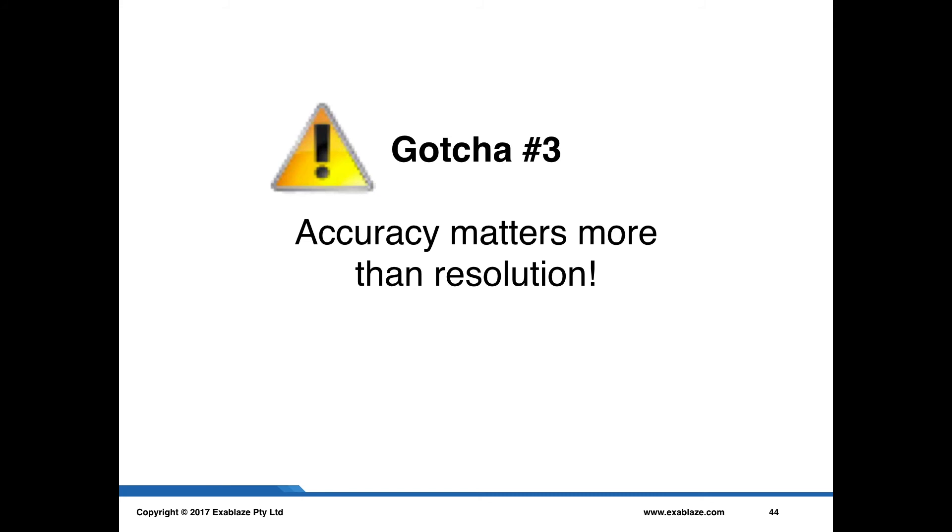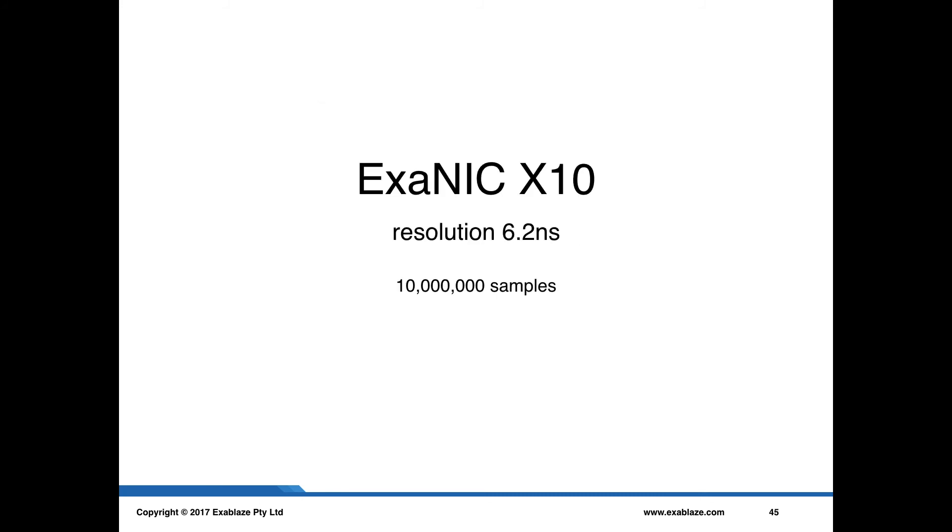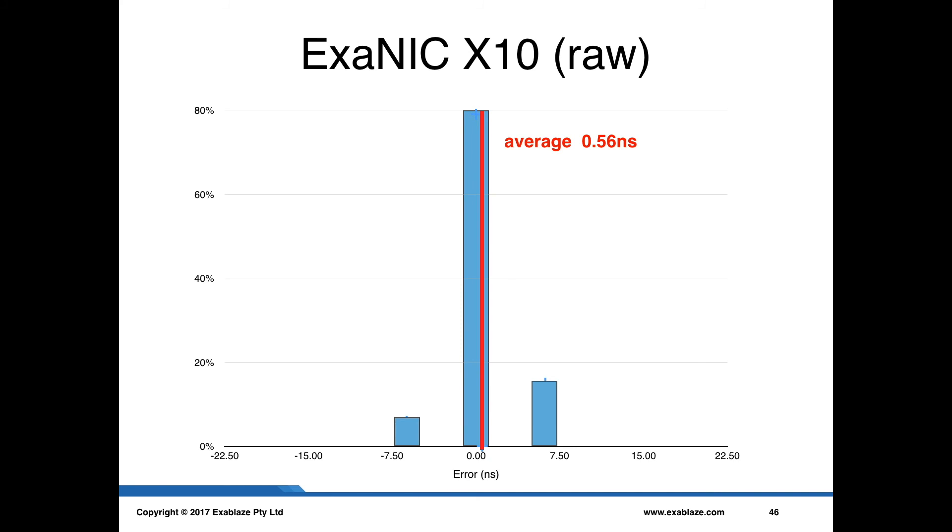Now, obviously, we'd be remiss not to include our ExaNIC device. So, we have our ExaNIC X10. Again, the same exact experimental setup, 6.2 nanosecond resolution, 10 million samples. And the results come out looking actually pretty good. What I want to point out here is that these are the raw results. There's no cleaning or smoothing involved in this. The average is pretty much spot on and we have just two buckets, one either side. And that's just sort of coincidental to the way the device works internally. But very good results that we can use in measurements going forwards.